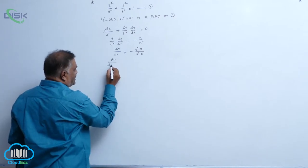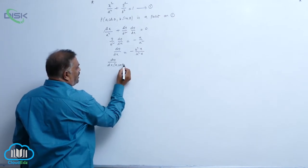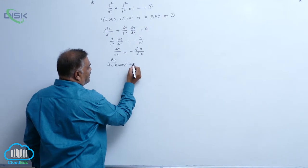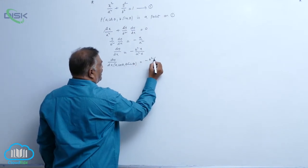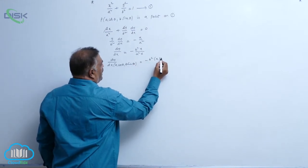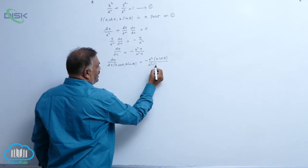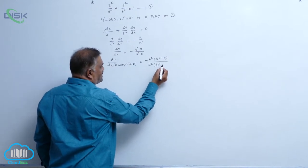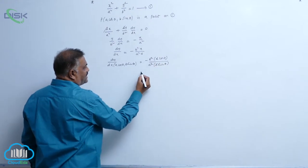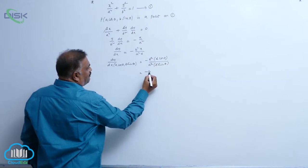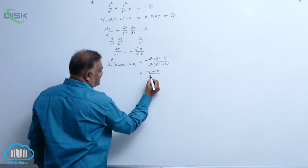dy/dx at (a cos θ, b sin θ) is equal to minus b squared into a cos θ divided by a squared into b sin θ. One b gets cancelled and one a gets cancelled, giving minus b cos θ by a sin θ.